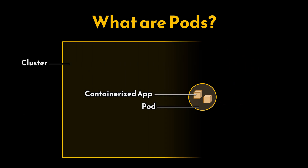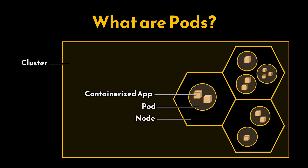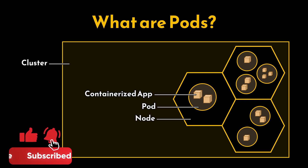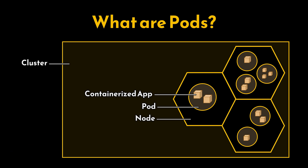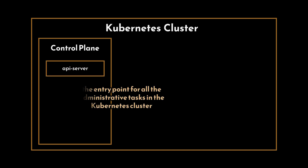The Kubernetes architecture is cluster-based, meaning Kubernetes operates using a cluster of machines to manage and orchestrate containerized applications. A cluster consists of multiple nodes, and each node can run one or more pods. There are two main types of nodes: the master node, which controls all activities within the entire Kubernetes infrastructure, and the worker nodes, which are managed by the master. The master, also known as the control plane, is responsible for maintaining the desired state of the cluster — such as which applications are running and their configurations.